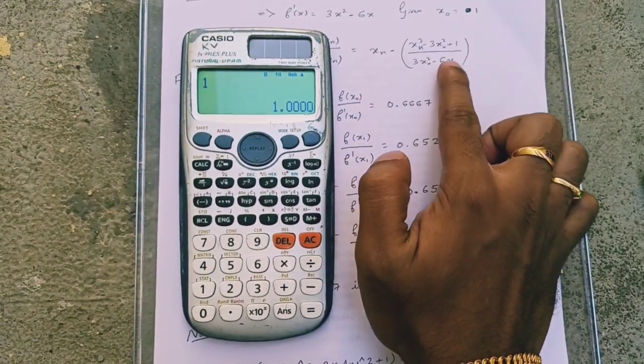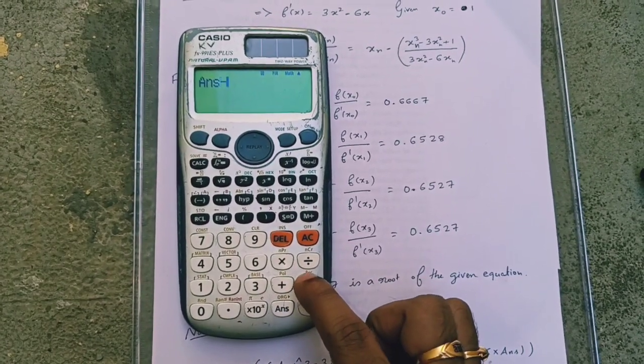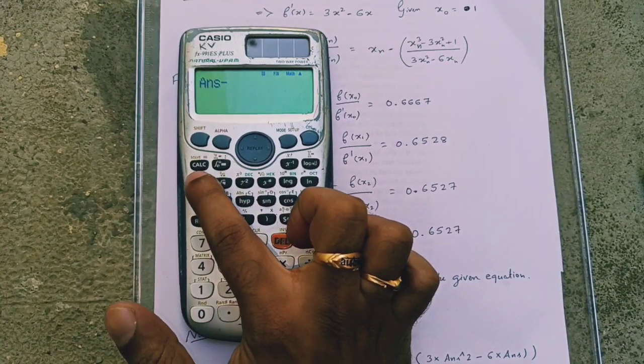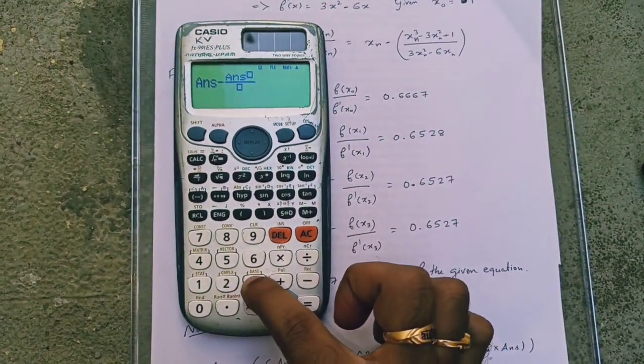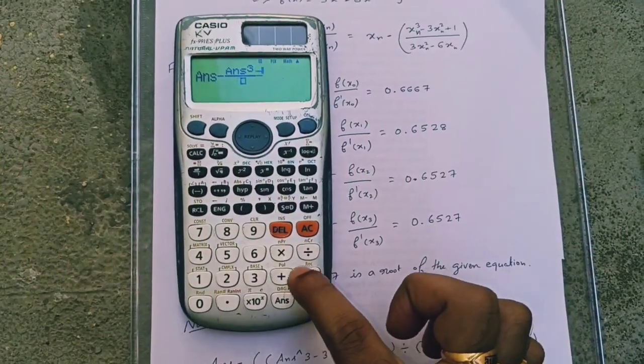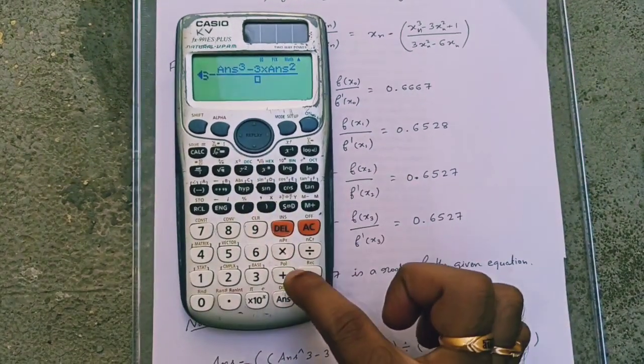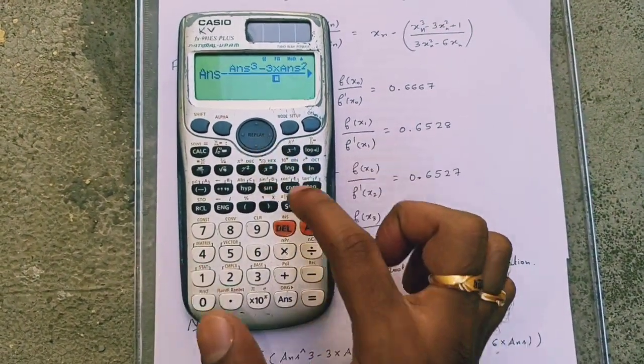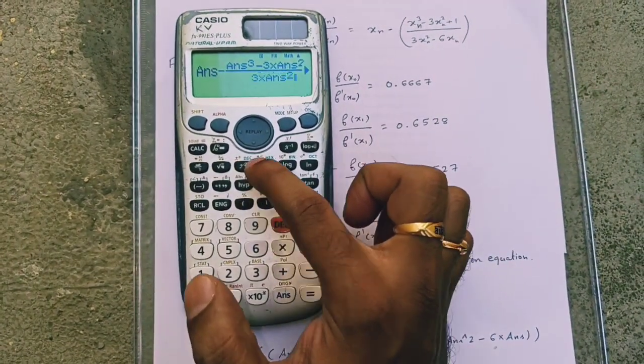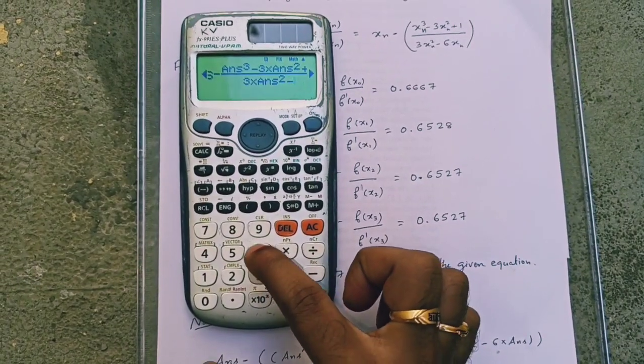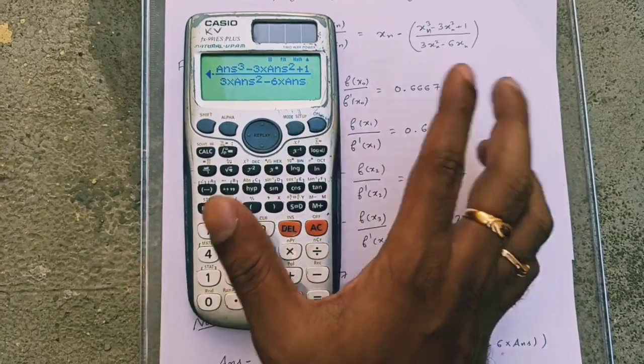Now, type this formula in terms of answer. Answer minus quotient symbol answer cube minus 3 into answer square plus 1 divided by 3 into answer square minus 6 into answer. So this is the formula.